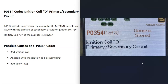And so what are some possible causes of a P0354 code? Well, it could just be a bad ignition coil. It could be an issue with the circuit or the wiring going to the ignition coil. And it might also be a bad spark plug.